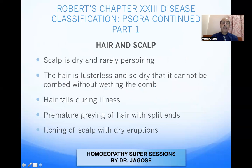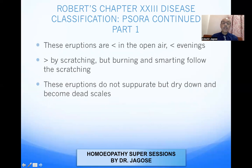Hair and scalp: the scalp is dry and rarely perspiring. The hair is lustrous but so dry that it cannot be combed without wetting the comb. The hair gets entangled when combed. There is also hair fall during illness and premature greying of hair with split ends, and itching of the scalp with dry eruptions. These eruptions are worse in the open air in the evening, better by scratching, but burning and smarting follow the scratching. The eruptions do not suppurate but dry down and become dead scales.